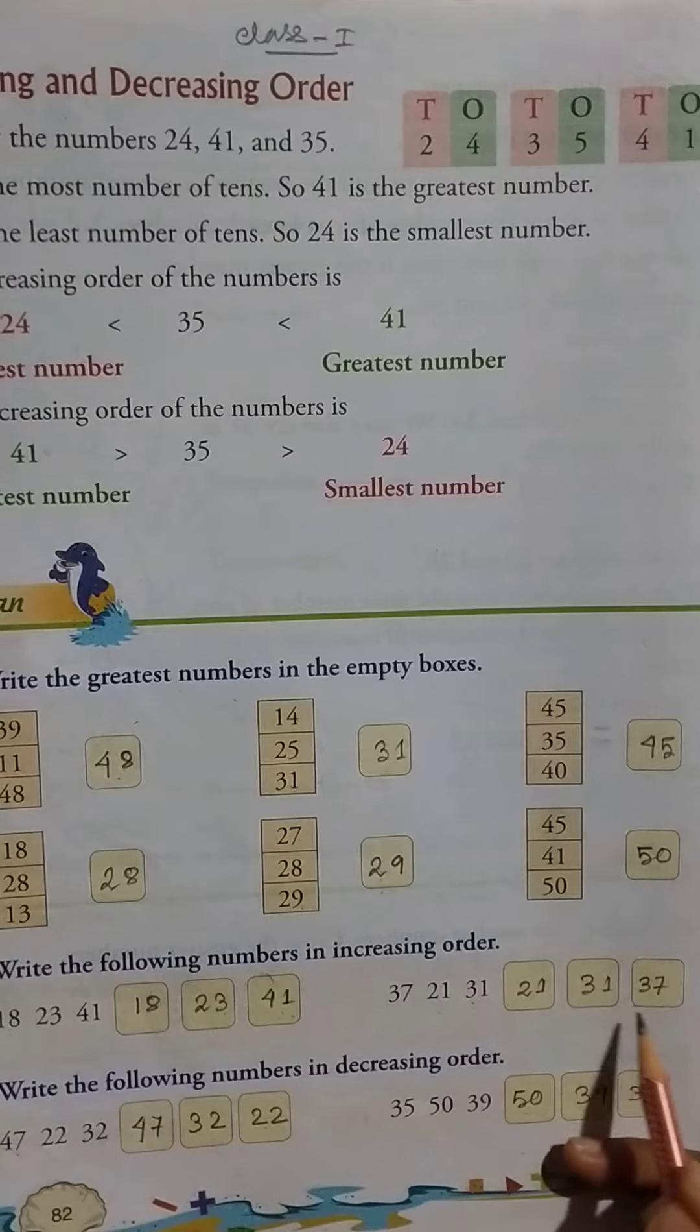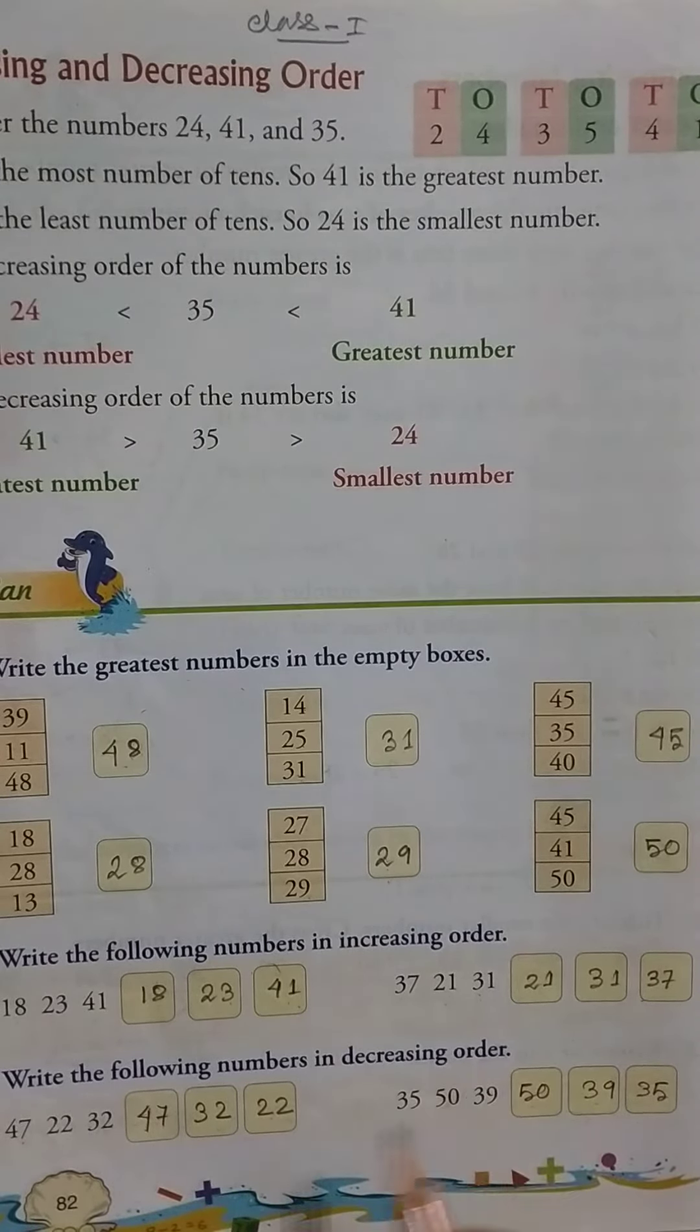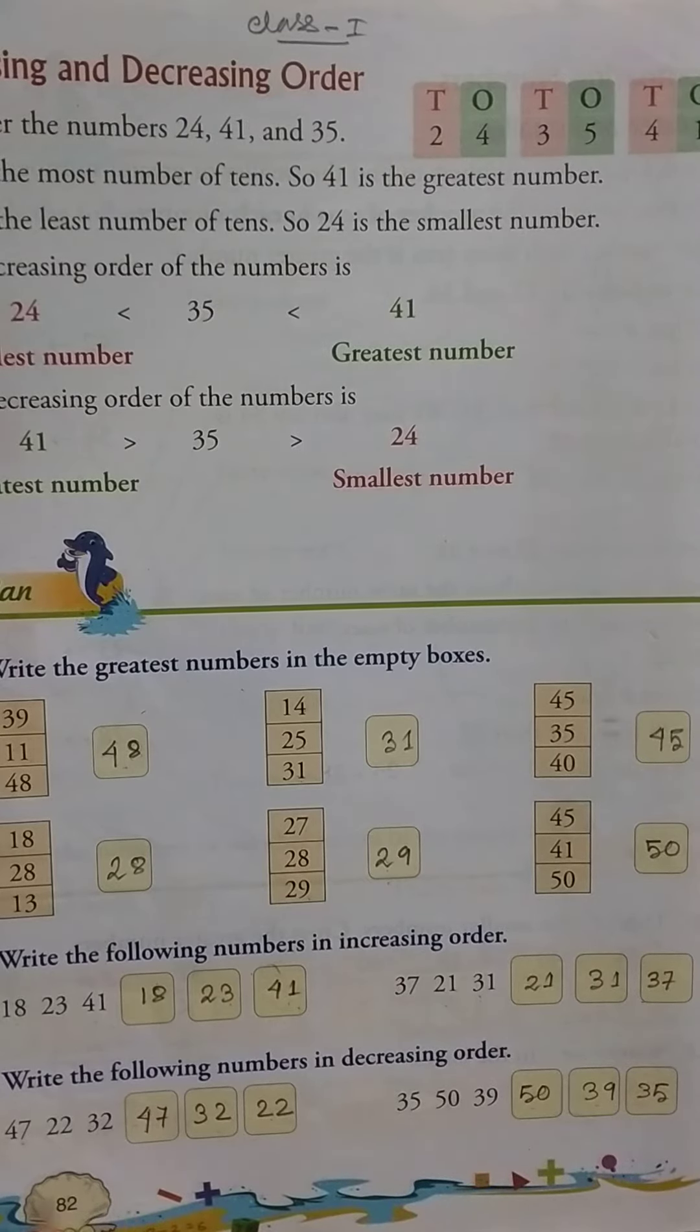So 47, 22, 32, so here 47, 32, and 22. Then 35, 50, 39, so here 50, 39, and 35.